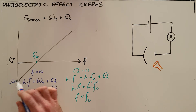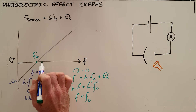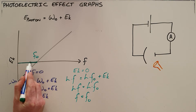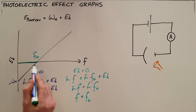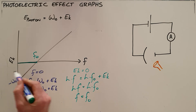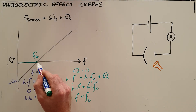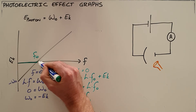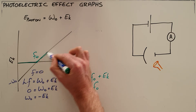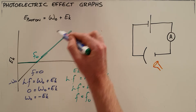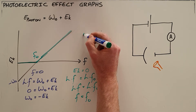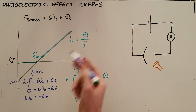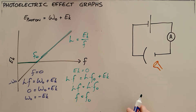This graph can tell us what the work function is and what the threshold frequency is. It makes sense because when photons have a frequency less than the threshold frequency, there is no kinetic energy since no photoelectrons are ejected. Once the threshold frequency is surpassed, the kinetic energy of those photoelectrons increases with a steady gradient, and that gradient — kinetic energy over frequency — equals Planck's constant.